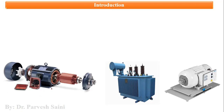As you can see in these three diagrams, you can observe one common thing in these three pictures. One is of a generator, one is of a transformer, and another one is of a motor. So these are the electrical machines.